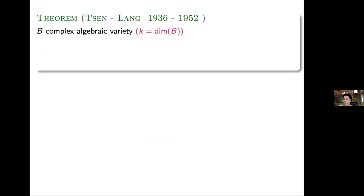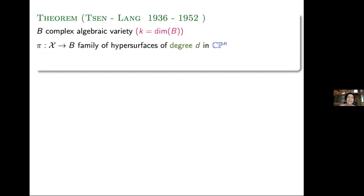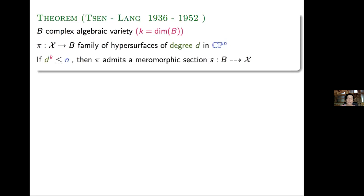I would like to discuss a generalization of this theorem for higher dimensional bases. Let's work over a complex algebraic variety B, now possibly of higher dimension k. Then the generalization by Lange of Senn's theorem says: if I have a family of hypersurfaces of degree d in P^N, and if the degree satisfies d^k ≤ N, then again this family of hypersurfaces admits a meromorphic section. This is the result when we work over higher dimensional bases.